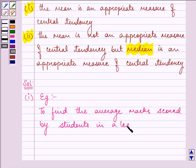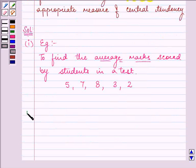In a test, we are given the marks of five students: 5, 7, 8, 3, 2. With the help of these observations we can find the average marks scored by a student in a test. This will give us an appropriate measure of central tendency.